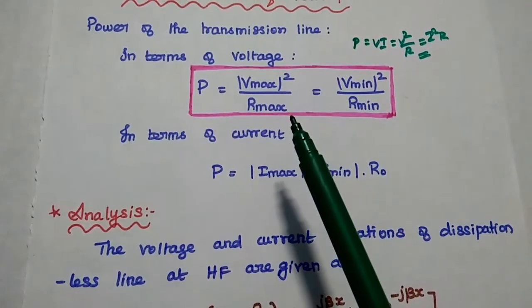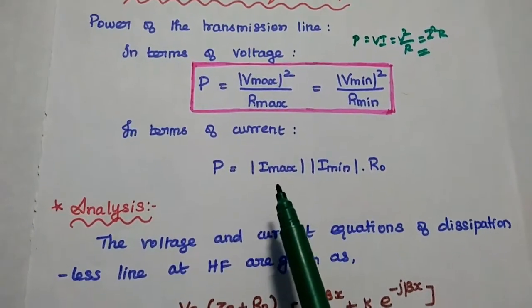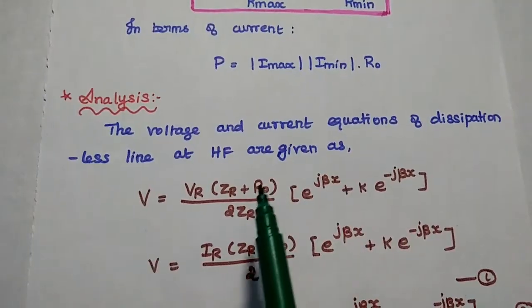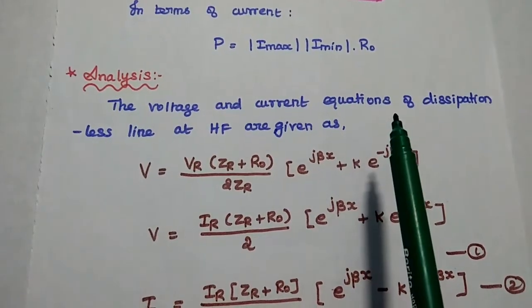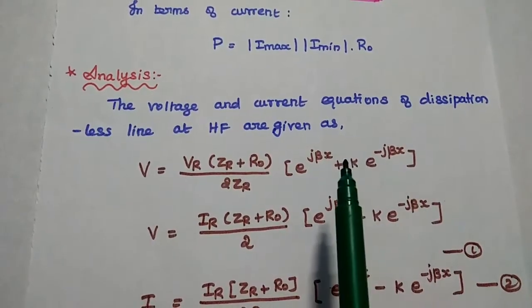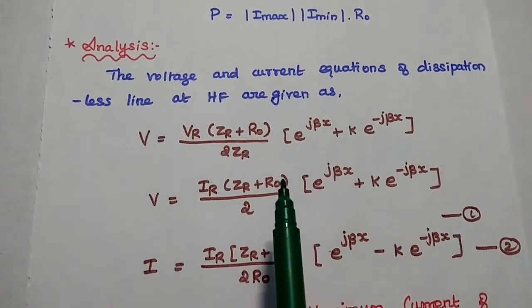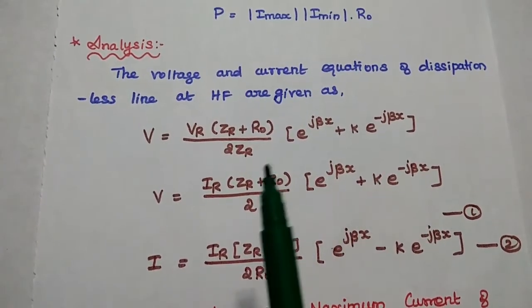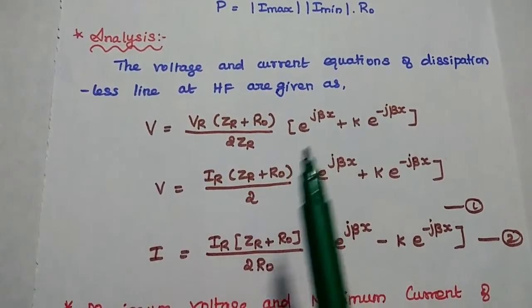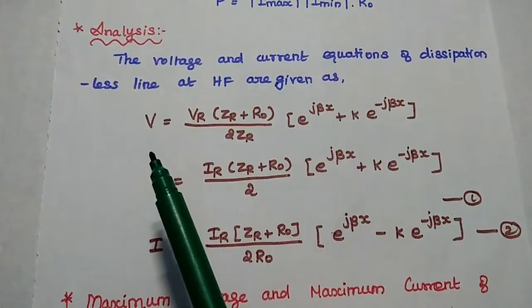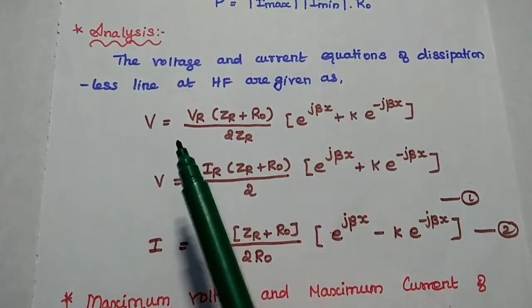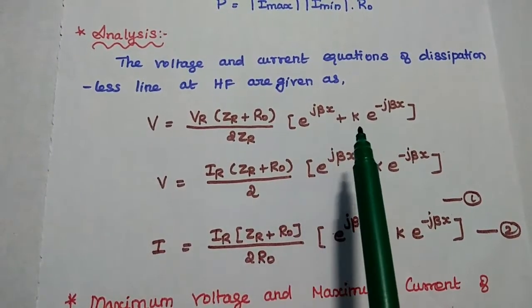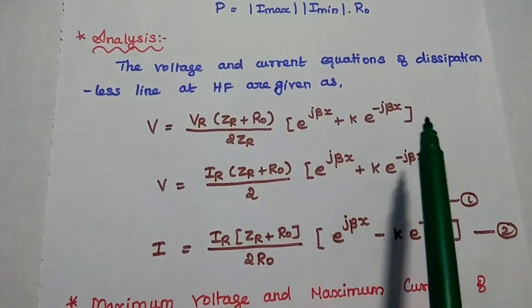Now we are going to derive V_max, R_max, V_min, R_min, and I_max values. We can take the voltage and current equations of the dissipation-less line at high frequency. Dissipation-less line means a zero-dissipation line. We have already derived these equations in the previous lecture. The voltage equation is: V = (V_R / 2Z_R) × (Z_R + R₀) × (e^(jβx) + K·e^(-jβx)).